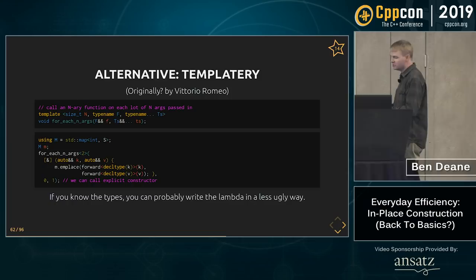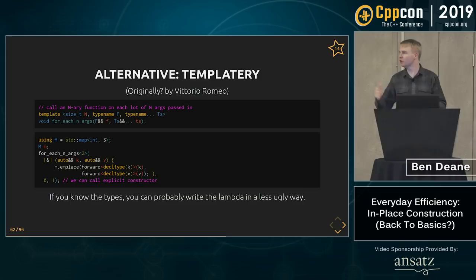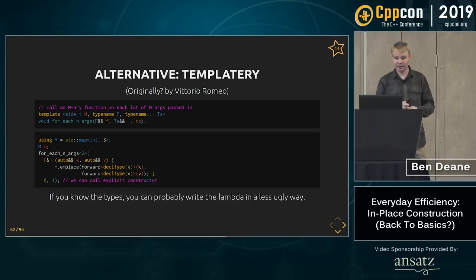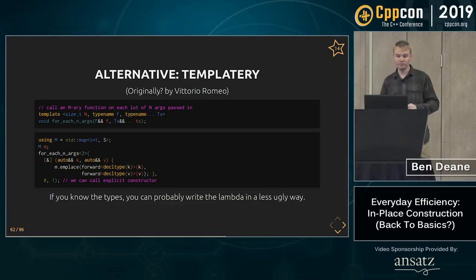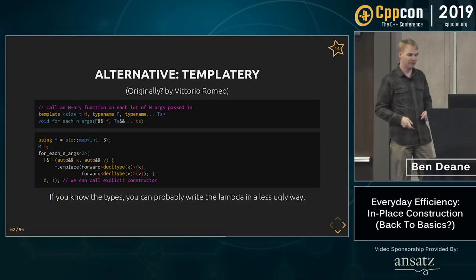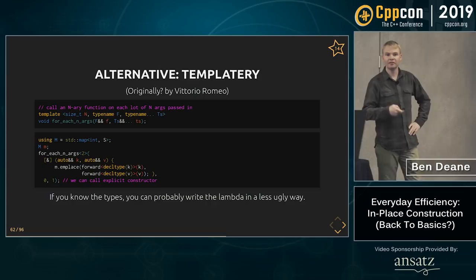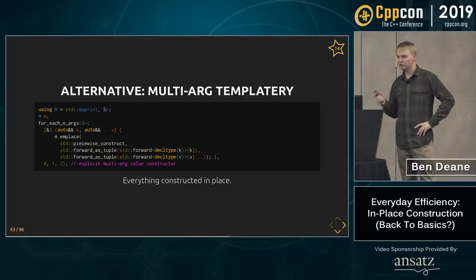An alternative is something presented a few years ago by Vittorio — a for_each_n_args function template that perfectly forwards its arguments in batches of n to the function you give it. You can use it with a lambda to perfectly forward arguments to the map's emplace, and then give it a bunch of key-value pairs. It can call explicit constructors because it uses emplace. For multi-argument constructors on your mapped type, you can use this lambda with the piecewise_construct argument on pair.